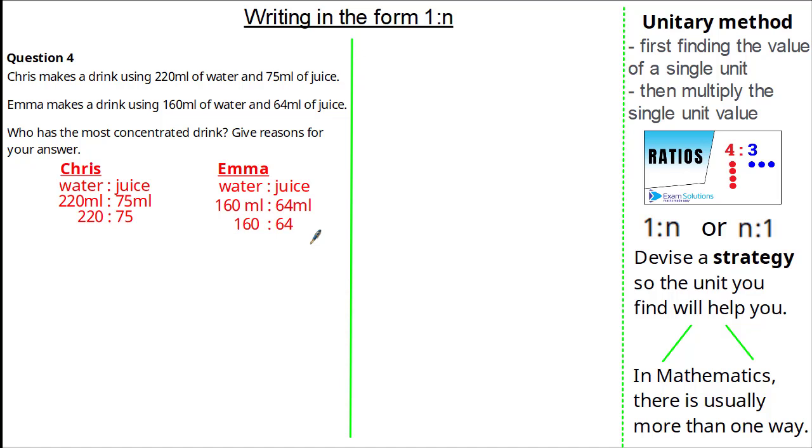Now, the strategy I want to use is to compare one part water to juice. So for Chris, I'm going to divide by 220 to both sides, giving me one part water to 0.341 parts juice. For Emma, to find one part water, I divide by 160. To give me one part water is 0.4 parts juice. Now you can see, for each one part of water, Emma has the most juice. So therefore, Emma has the most concentrated drink because for every one millilitre of water, she gets more juice.